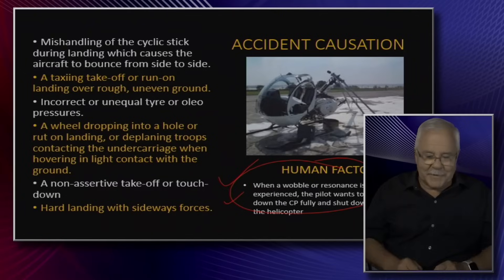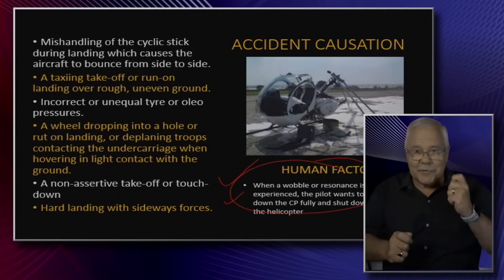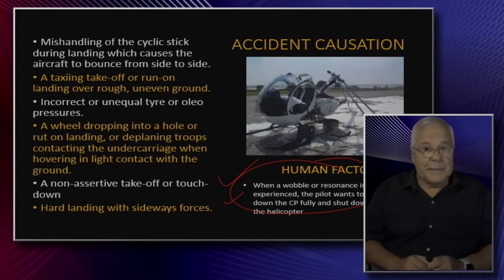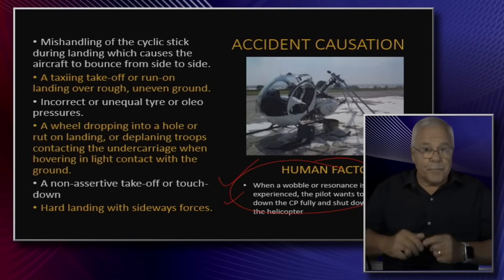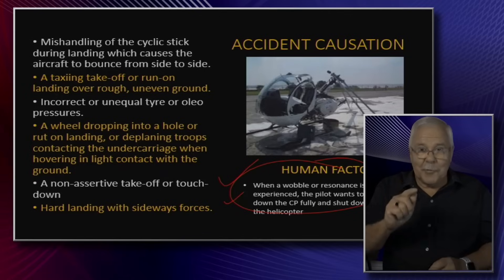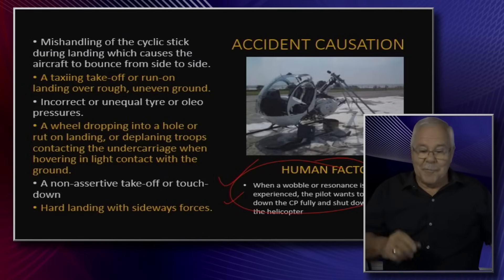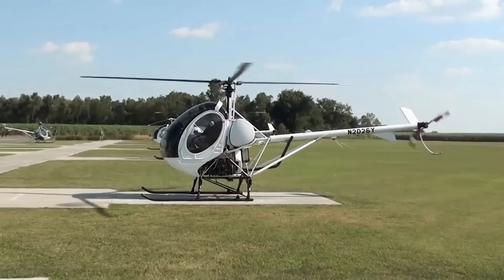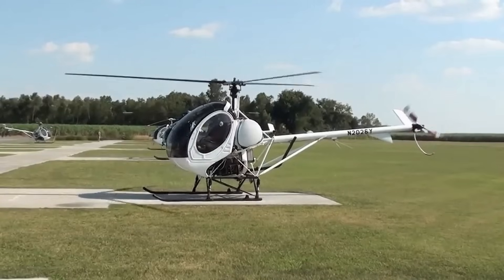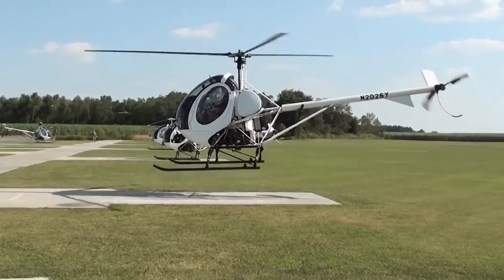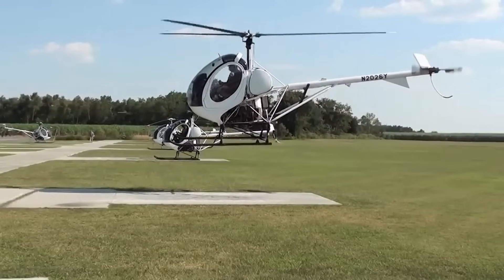There is a human factor here as well. When a wobble or resonance starts, the first instinct is to throw down the collective pitch and shut down — unfortunately that is not the right thing to do. Here is a UH-300: you can see as it takes off there's a wobble, and then the pilot pulls it into the air — exactly the right thing to do. You've got to be assertive with your takeoff should something like this happen.